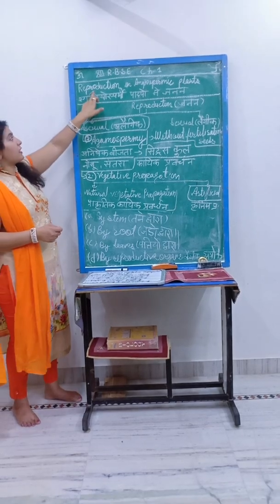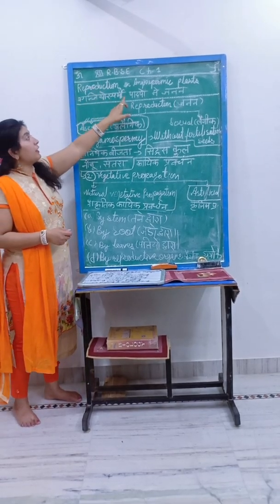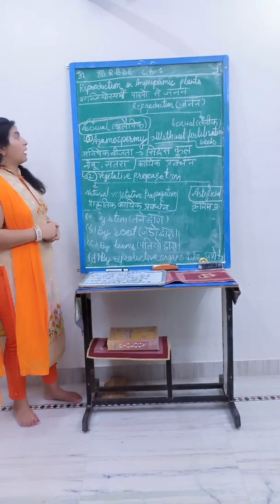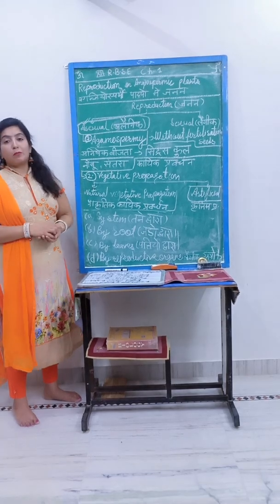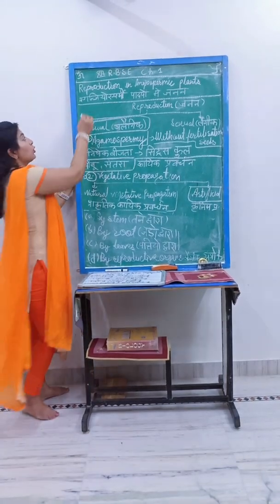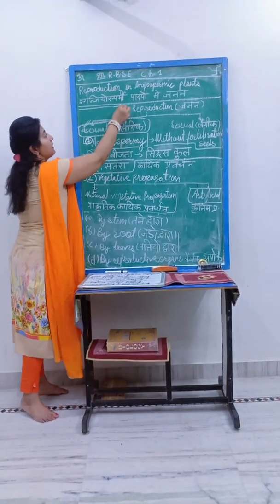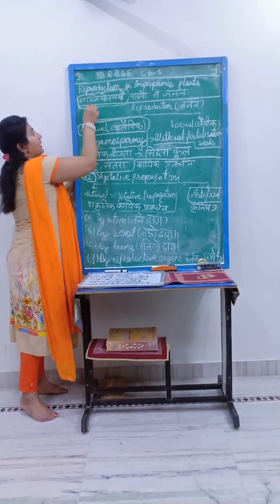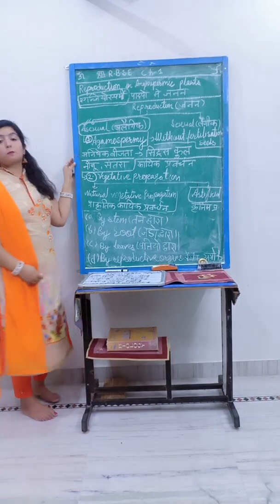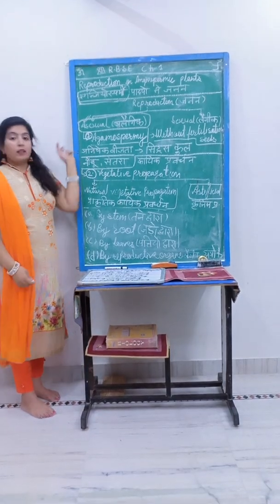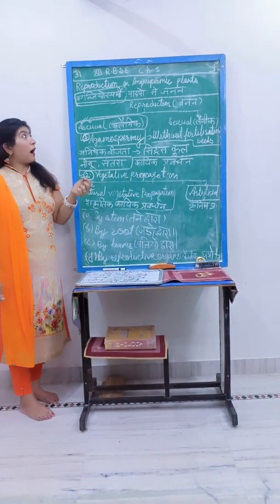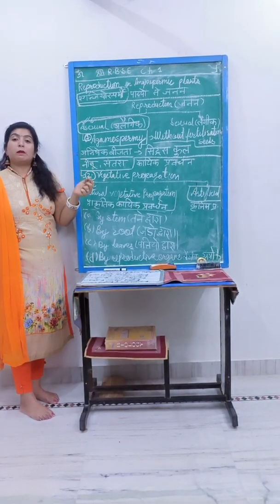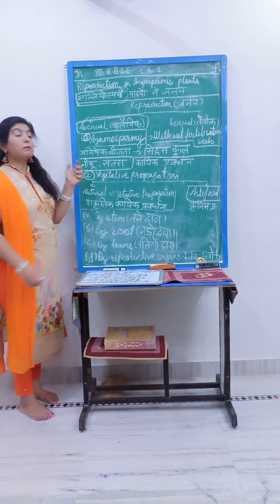Let's start the chapter. The name of the chapter is Reproduction in Angiospermic Plants. Now, the first thing you need to know about Angiosperm is: what is Angiosperm?